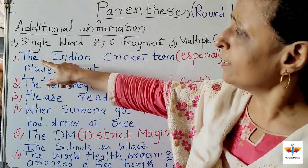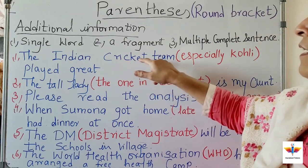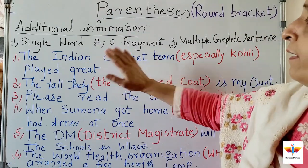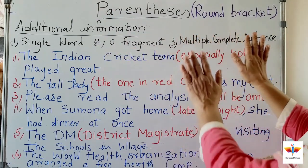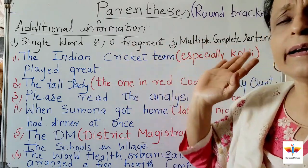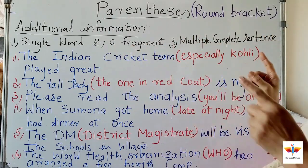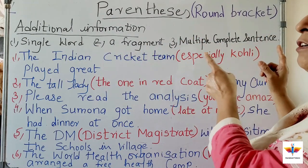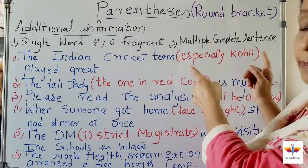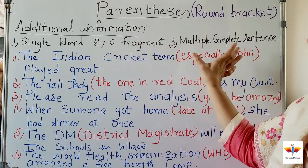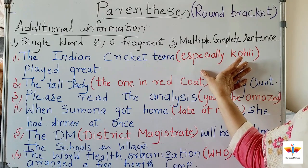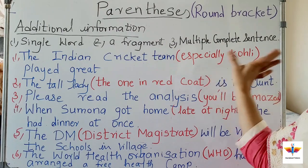For example: 'The Indian cricket team, (especially Kohli), played great.' If you don't put this round bracket, 'The Indian cricket team played great' is already a complete sentence. But you want to emphasize especially Kohli played great. So that additional information is put in the round bracket — that is parenthesis.